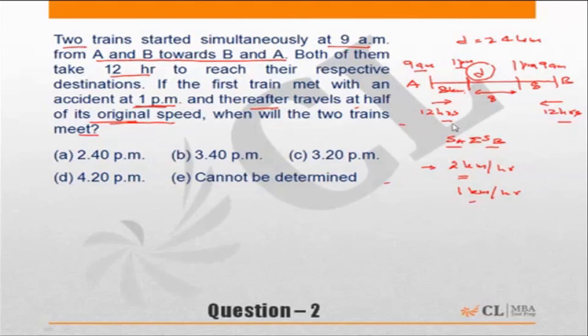So effectively, now the question becomes: the gap or distance between the two trains is 8 kilometers. The train coming this side is at 2 kilometers per hour, while the train from A to B is now traveling at 1 kilometer per hour. So how much time will they take to meet?